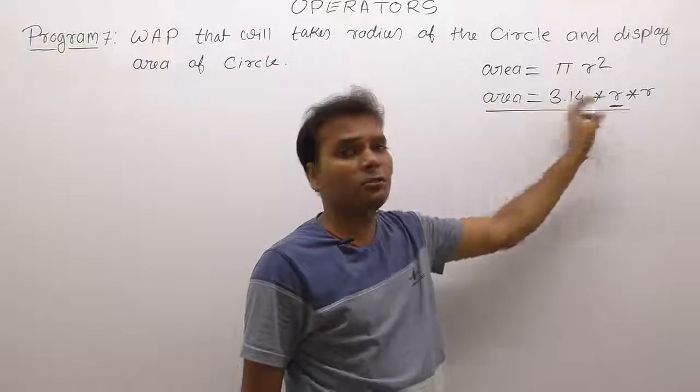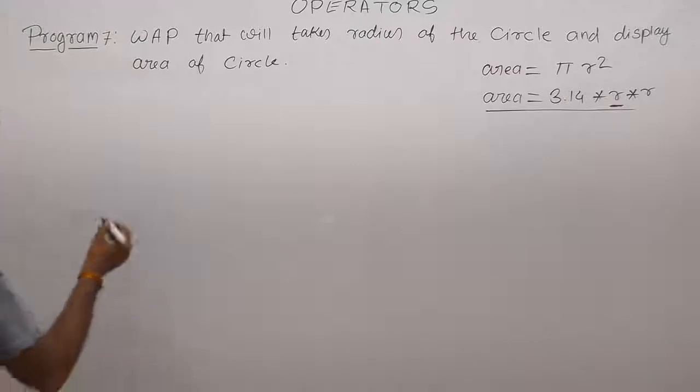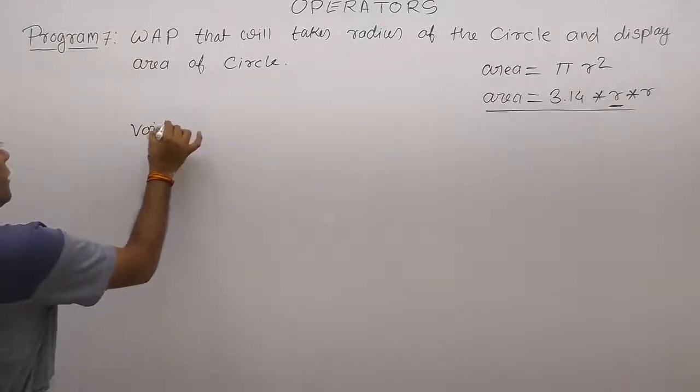So this is the total number of variables required: only two variables. Therefore we are declaring two variables initially. void main.